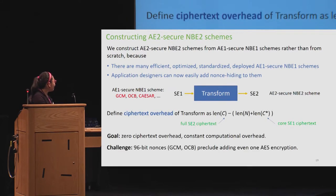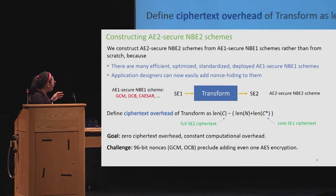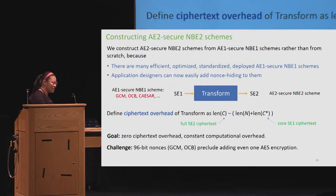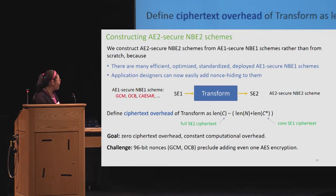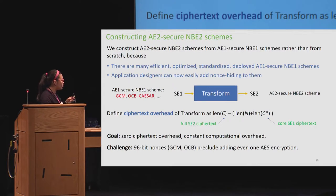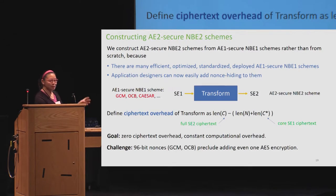Our goals for these transforms are zero ciphertext overhead and constant computational overhead. For zero ciphertext overhead, it's not a simple comparison of core ciphertext length versus full ciphertext length — that's not a fair comparison. If in usage you're sending the nonce in the clear, what you should really compare is the length of the nonce concatenated with the core ciphertext versus the length of the full ciphertext. This makes it slightly non-trivial to achieve in practice because nonces are often shorter than one block of your block cipher primitive.